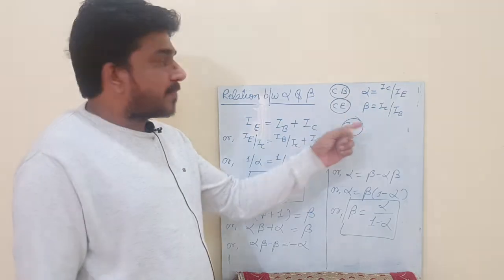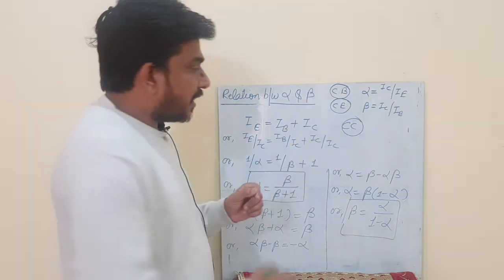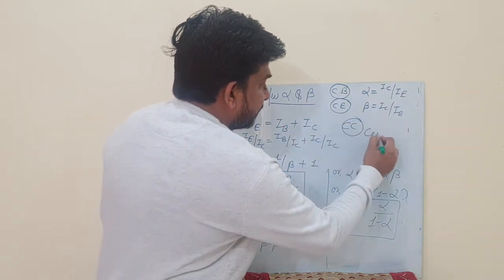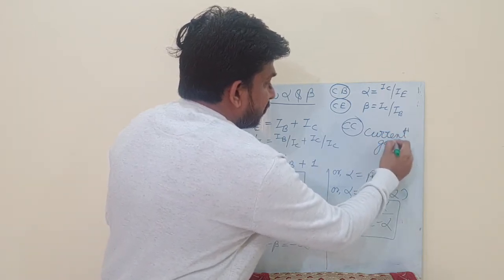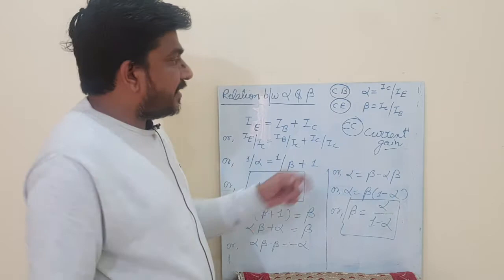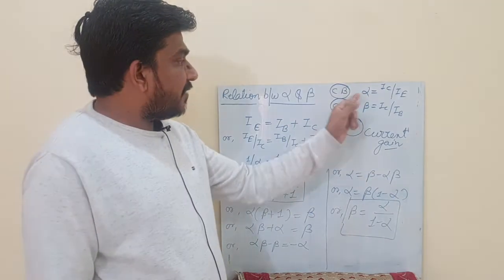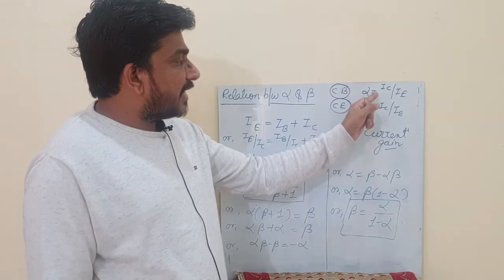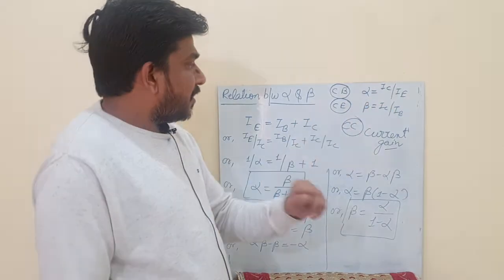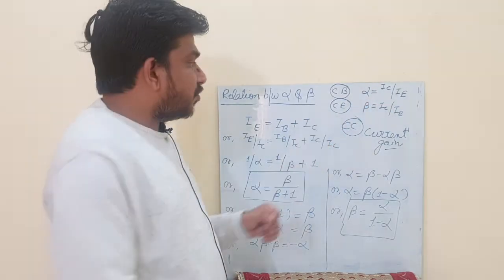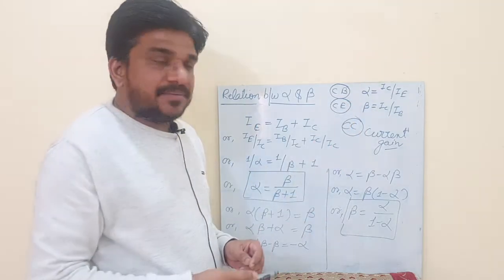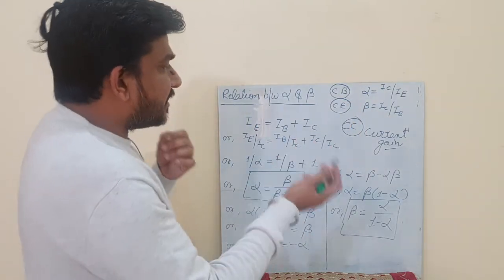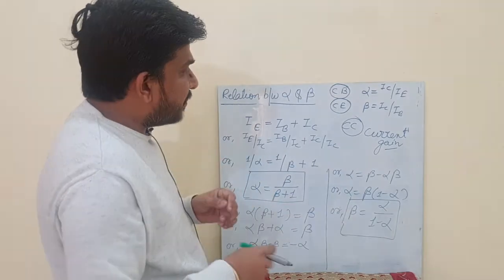Now what is alpha and beta? Alpha and beta are basically current gains. The current gain alpha in CB mode is the ratio of IC and IE, where in common emitter mode the ratio of IC and IB is known as beta. These are the current gains in two different configurations.